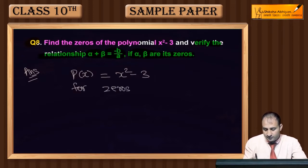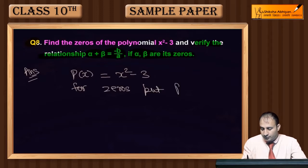We need to find out the value of x, which will be the zeros. When we set x² - 3 equal to zero, this comes out to be x² = 3.